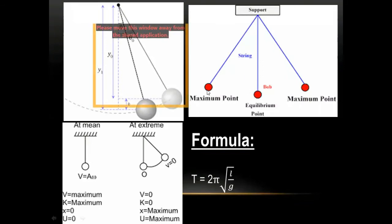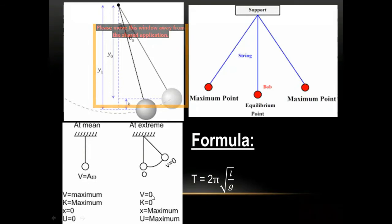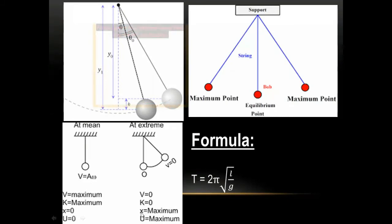At the extreme position: velocity is zero, kinetic energy is zero, and displacement is maximum — this is the maximum displacement from the mean position. At the mean position: velocity is maximum, kinetic energy is maximum, and displacement is zero. This explains the working of the simple pendulum and confirms its characteristics as simple harmonic motion.